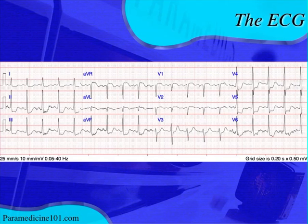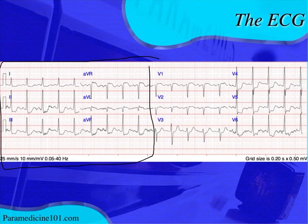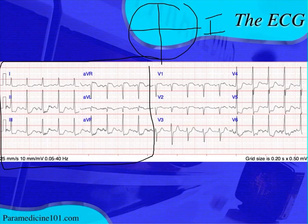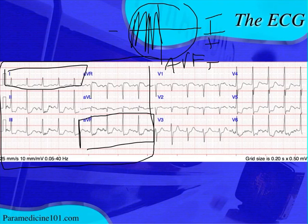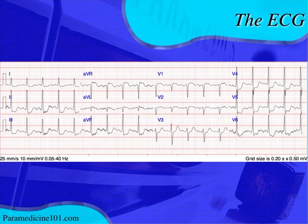First thing we're going to do is look at our frontal plane axis, so we're going to look at the first six leads. Using the quadrant method, you make a circle. Lead one is positive, so we shade out the negative side of lead one. Then we look at lead AVF — AVF is positive as well. Shade out the negative side of AVF, and we're in the normal quadrant. So we know that our QRS axis is normal.